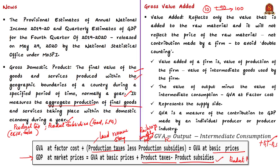GVA gives the perspective of the supply side and not the demand side — this is why GVA is described as a measure of the contribution to GDP made by an individual producer or industry. From January 2015, India adopted a new methodology: sector-wise estimates of GVA are now given at basic prices instead of factor cost. India switched to this methodology to adhere to international norms — the United Nations System of National Accounts (SNA).